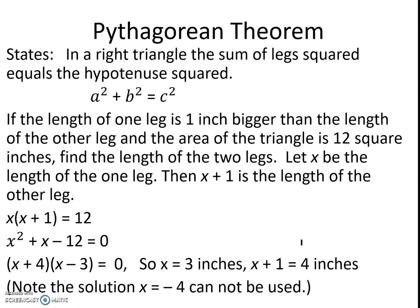We're given the example, if the length of one leg is one inch bigger than the length of the other leg, and the area of the triangle is 12 square inches, find the length of the two legs. Let x be the length of one leg, then x plus 1 is the length of the other. So we know x times x plus 1 equals 12.